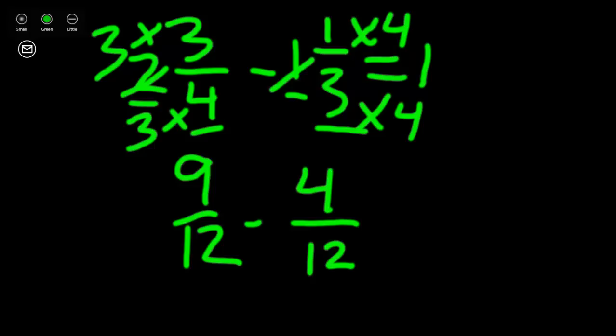Now, since we have nine-twelfths minus four-twelfths, we can see that our denominators are the same, so it makes it very simple to subtract just our numerators. Nine minus four is five, and our denominator stays the same.